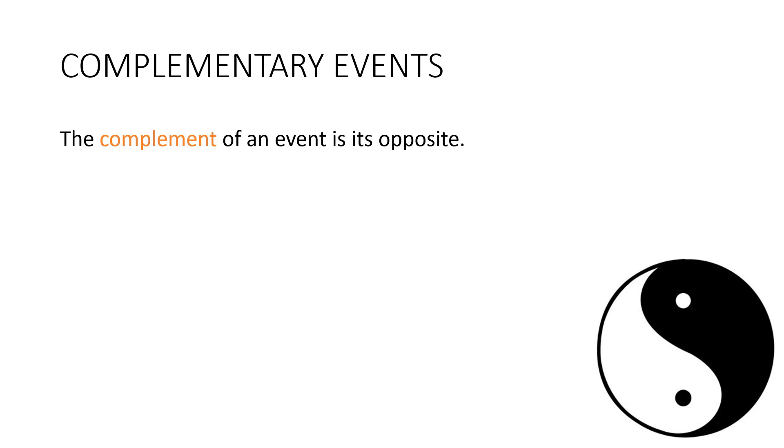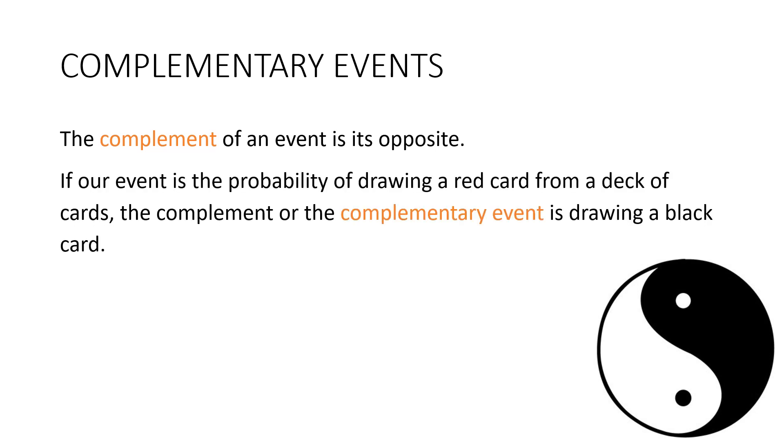Now the complement of an event is its opposite. So if our event is the probability of drawing a red card from a deck of cards then the complement or the complementary event would be drawing a black card.